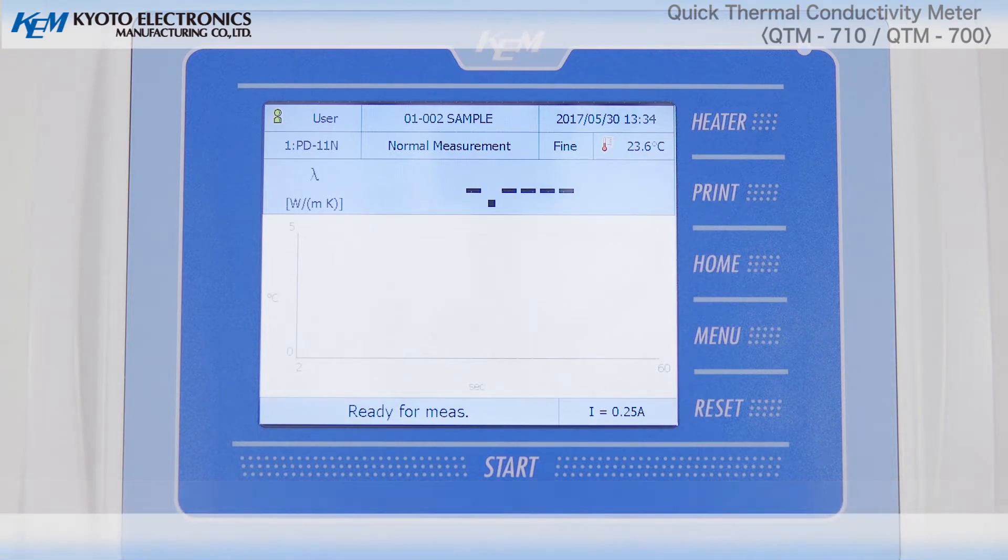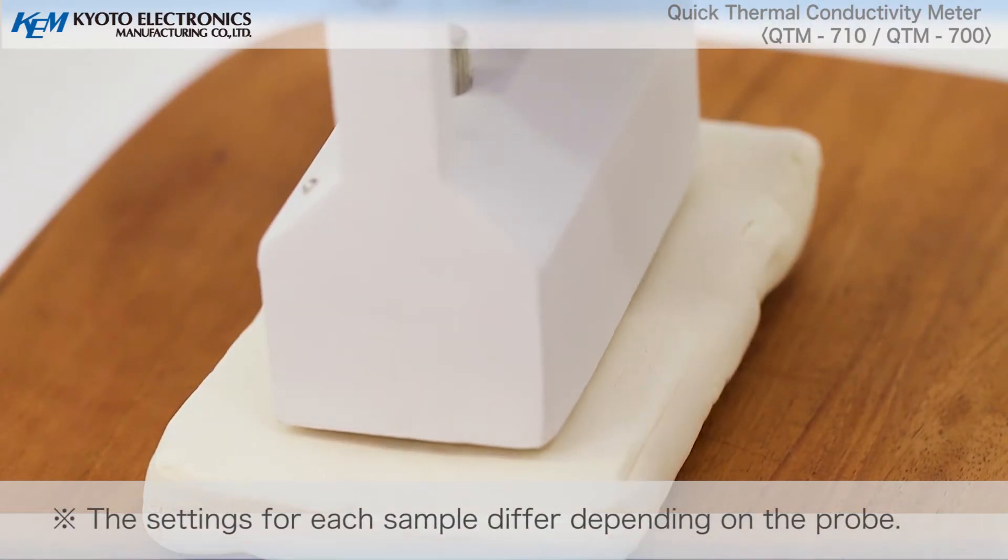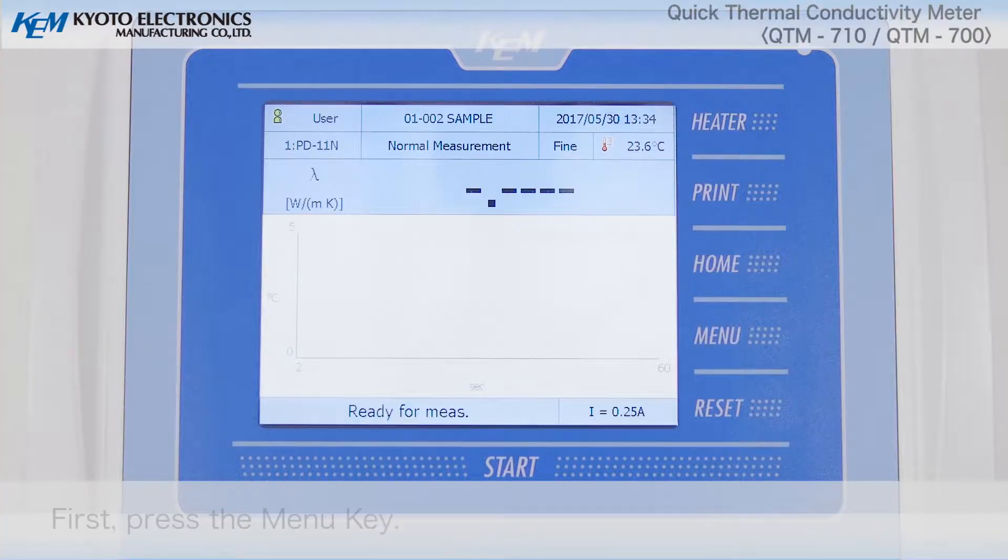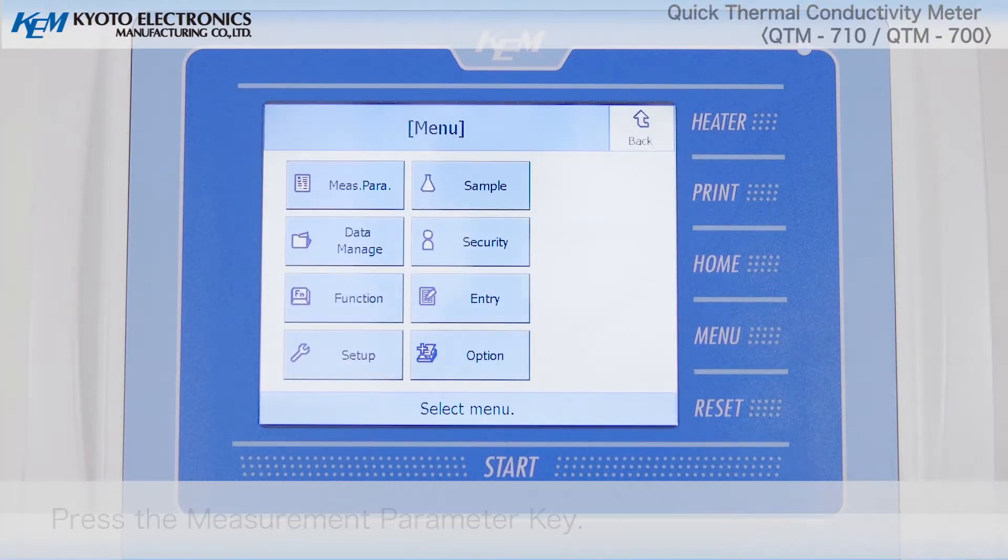After applying the probe to the sample, perform the measurement. Place the probe on the sample. This time we will make preparations for standard measurement parameters. First, press the menu key. Press the measurement parameter key.